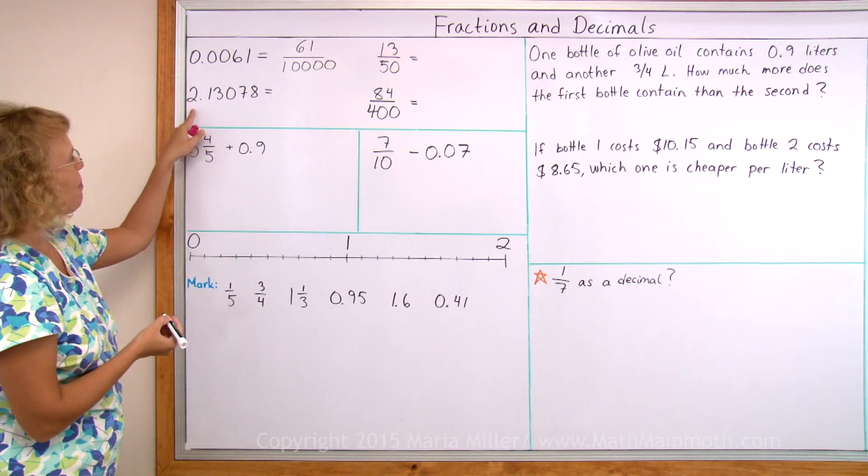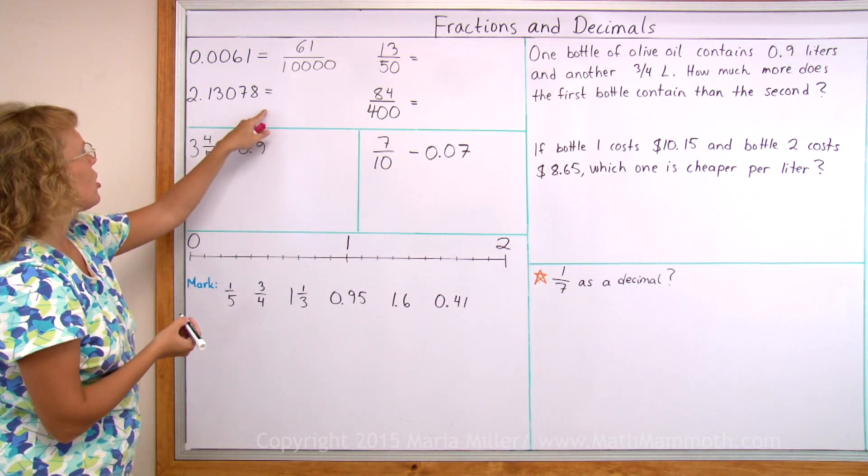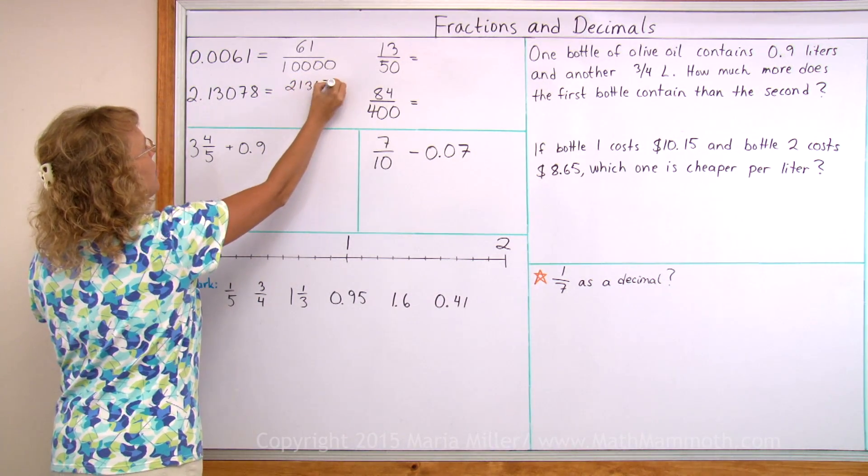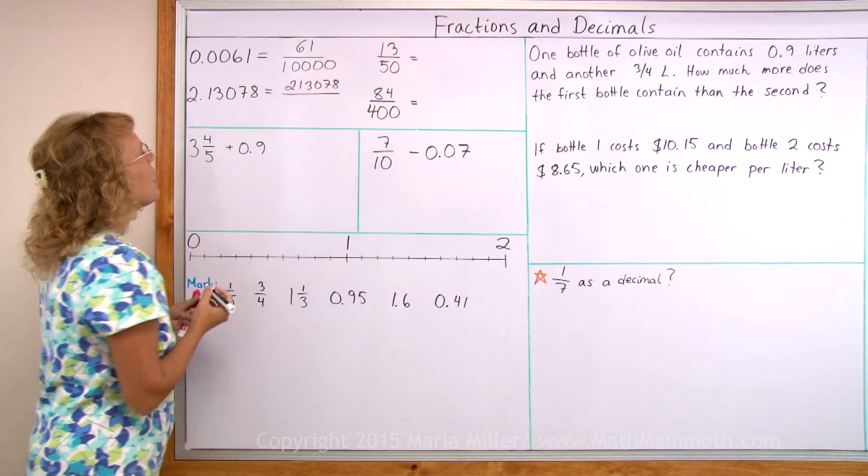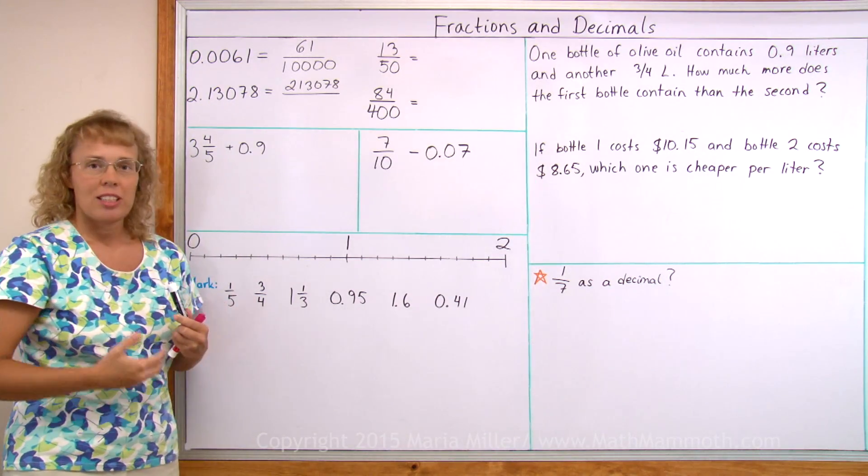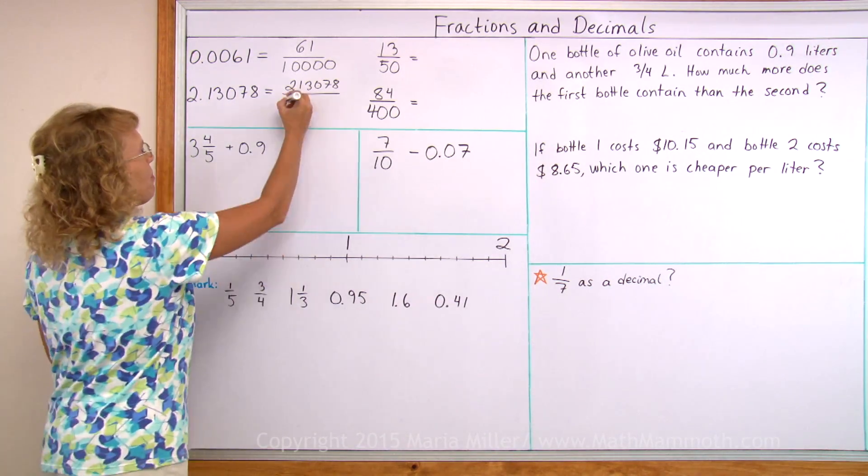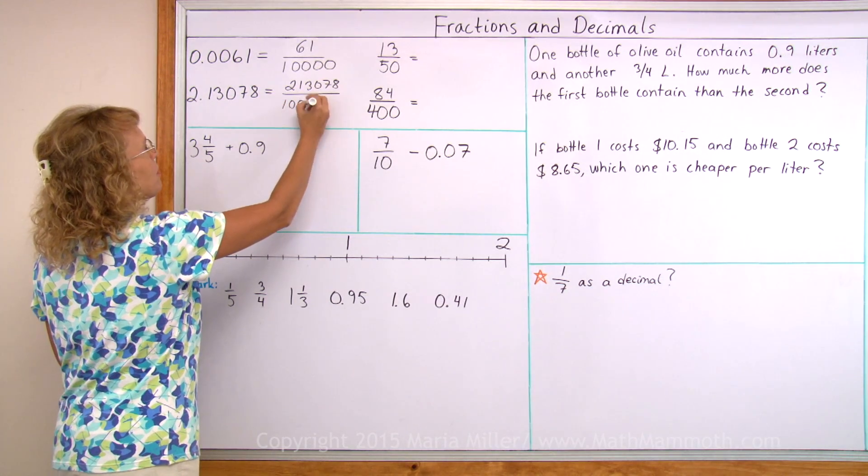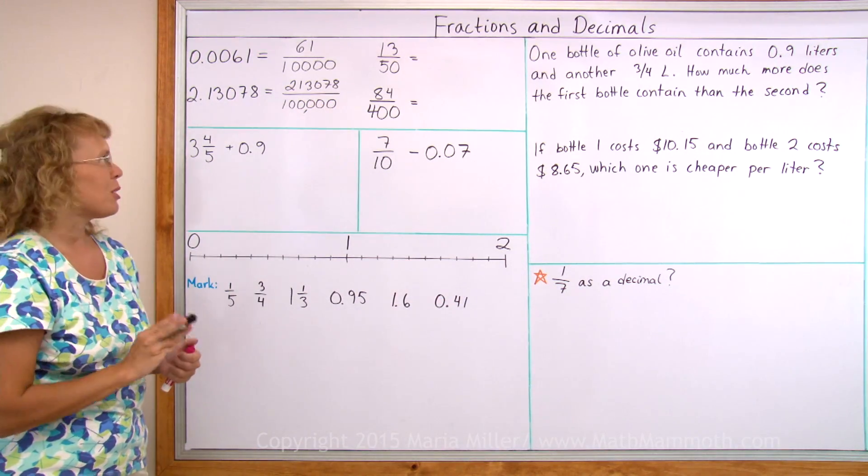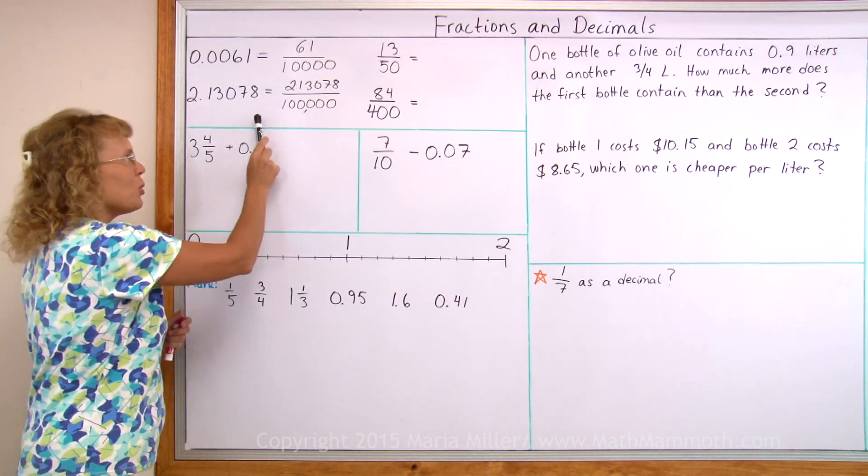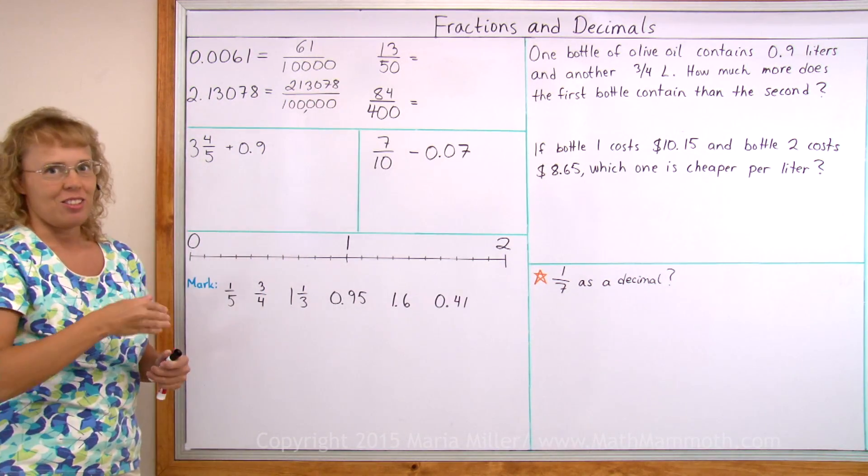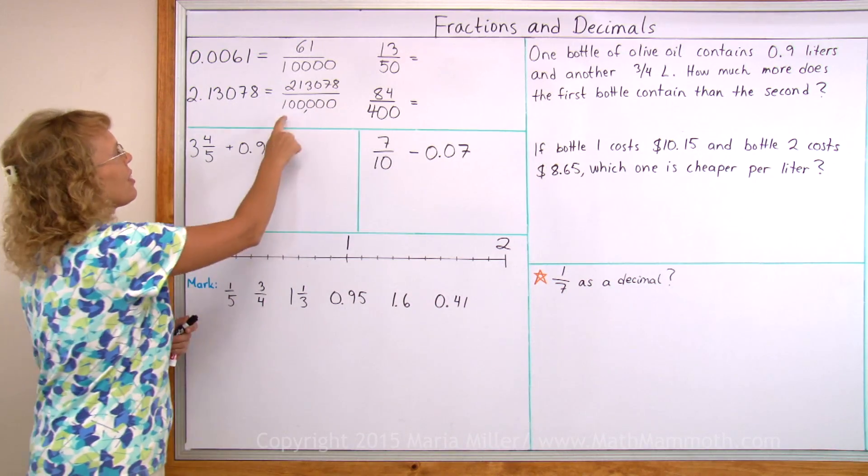Let's try another one. I'll just copy all those digits starting from 2 till 8. 2, 1, 3, 0, 7, 8. And then 1, 2, 3, 4, 5. The denominator is actually 10 to the fifth power, or 1 followed by five zeros. I could of course write this as a mixed number too. I could write it as 2 and then put 13,078 on the top as the numerator and then the same denominator.